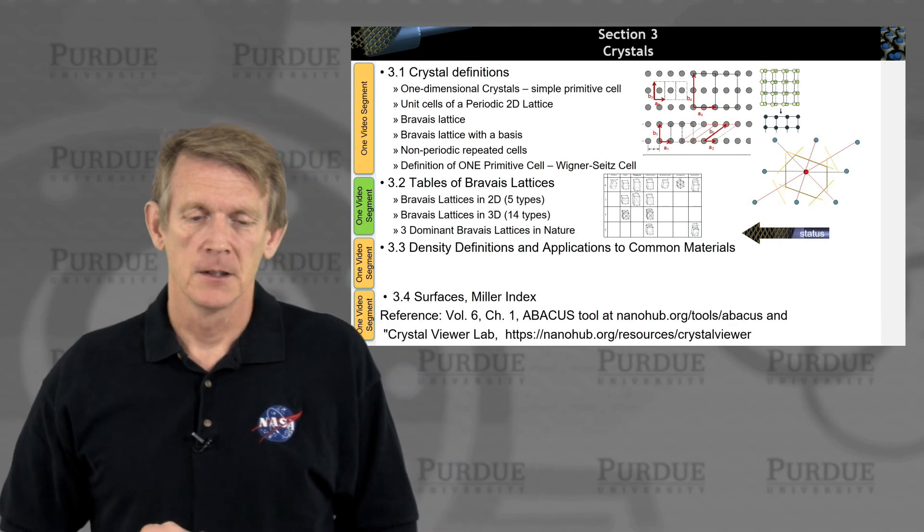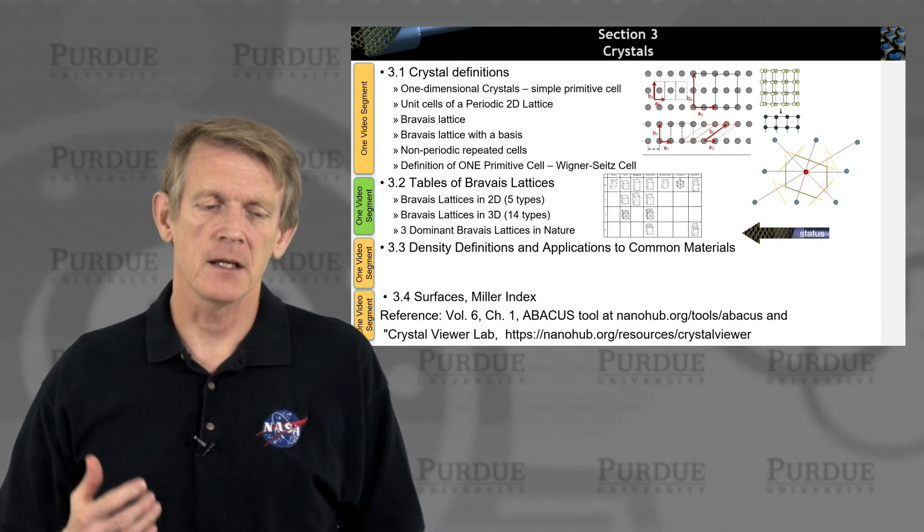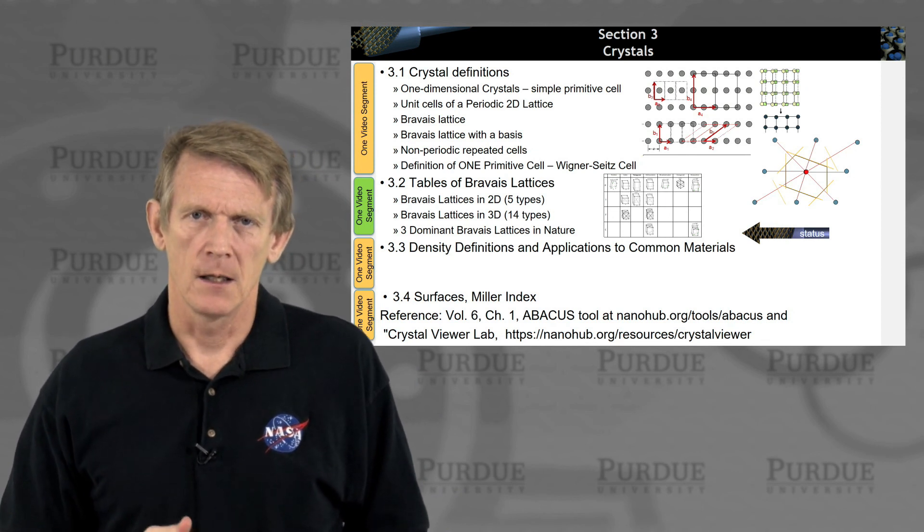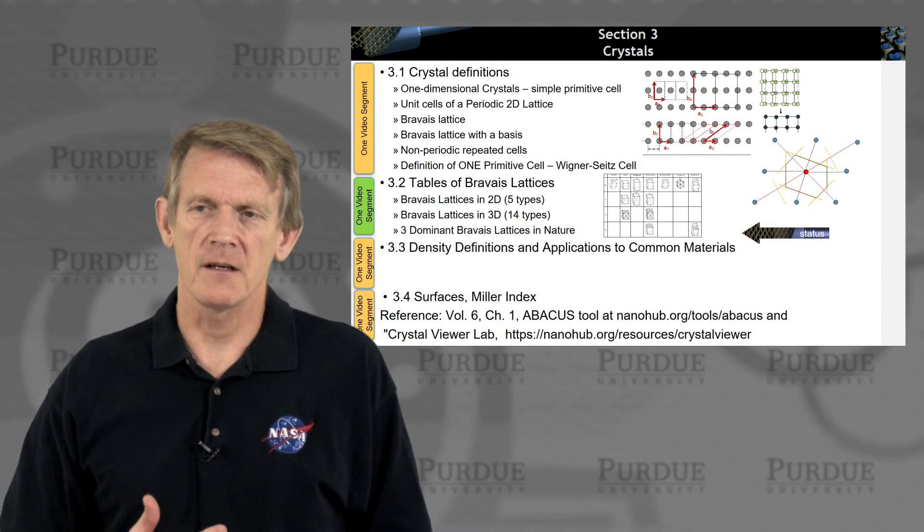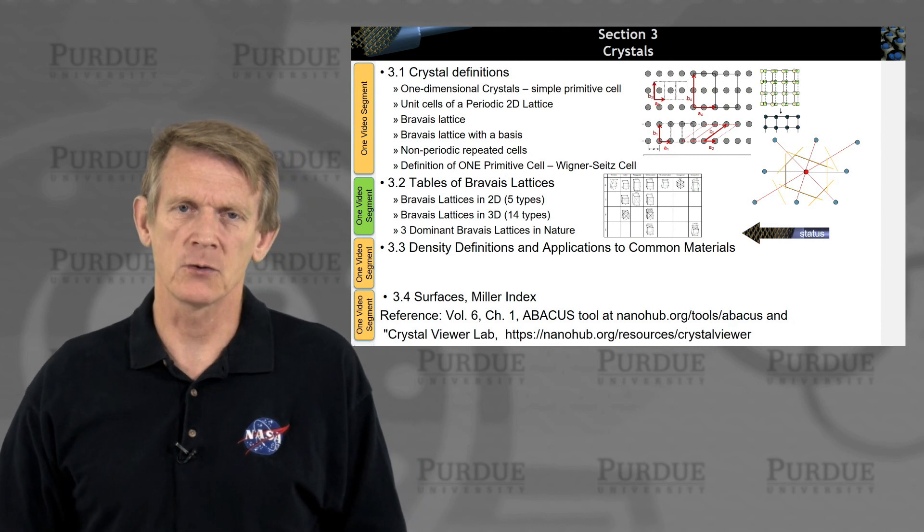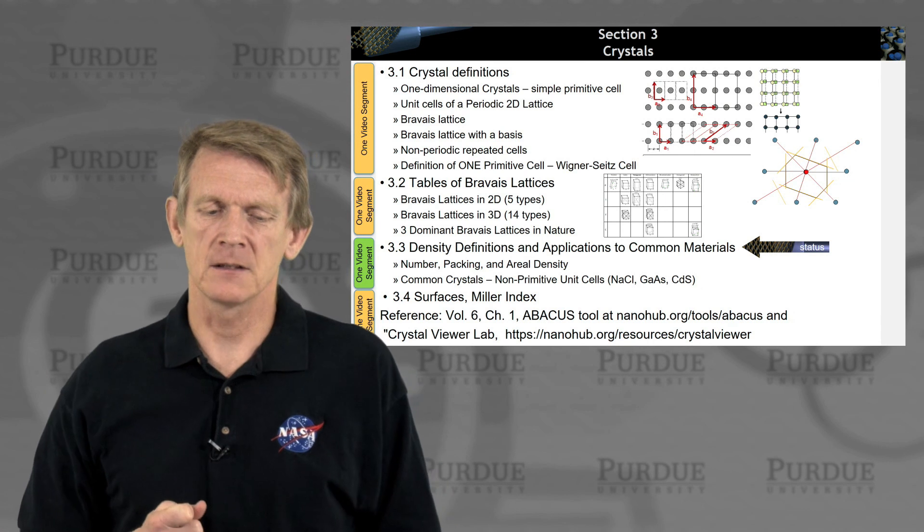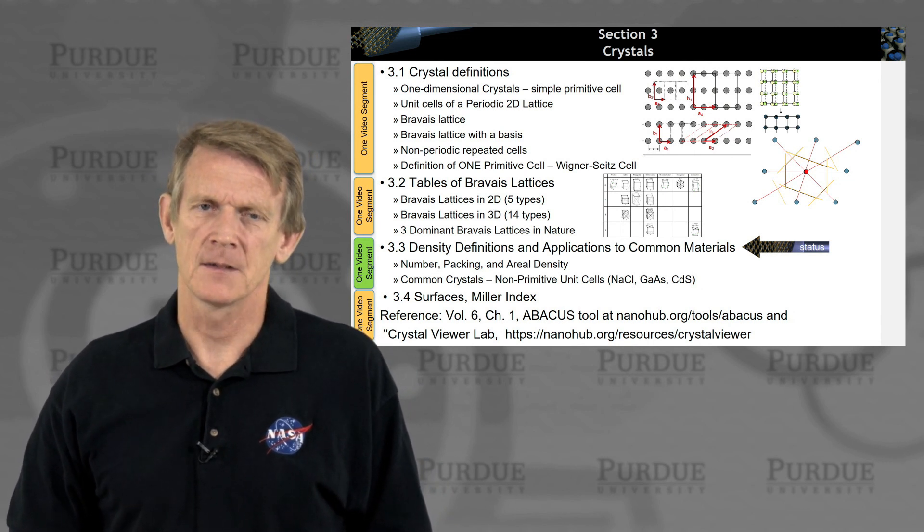So that covers the listing or the tables of Bravais lattices that people use to describe crystals that are describing or give a complete description of crystalline materials and their space groups. And next, I'll be talking a little bit about some density definitions and applications to common materials. Thank you.